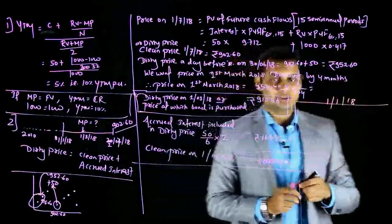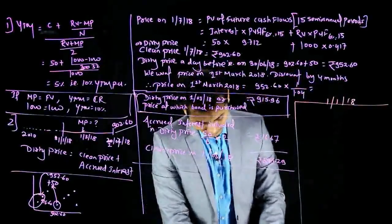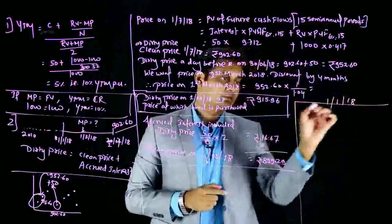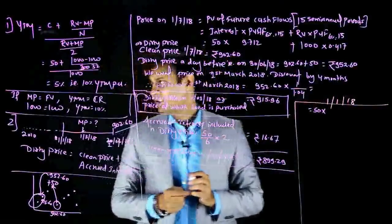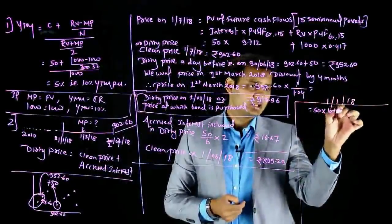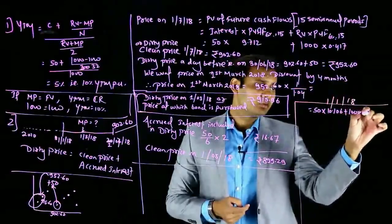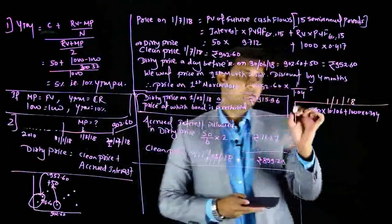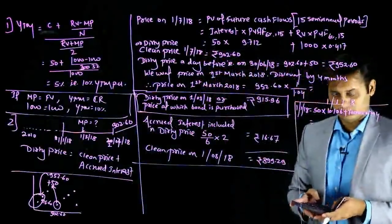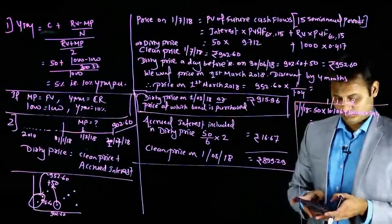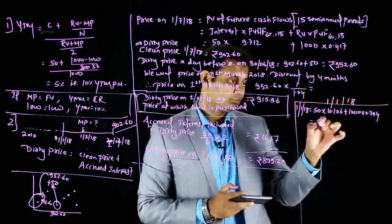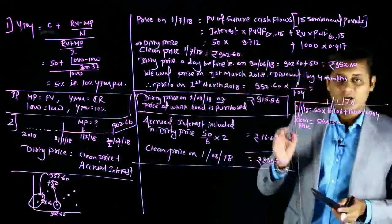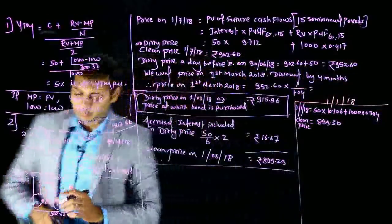Now let's verify using Method 2 — calculating price on January 1, 2018. For January 1, 2018, there are 16 semi-annual periods remaining. Formula: ₹50 × PVAF(6%, 16) + ₹1,000 × PVF(6%, 16) = ₹50 × 10.106 + ₹1,000 × 0.394 ≈ ₹899.3. This is the clean price on January 1 (reset date).